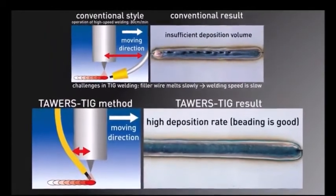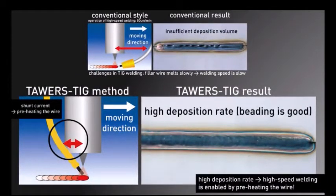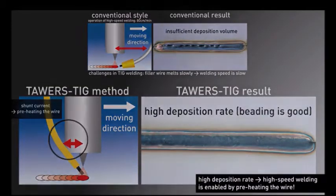the filler wire is located closely to the electrode which lets the arc preheat the wire. That way, the wire melts faster and the speed of the entire welding process is improved by the TIG welding robot.